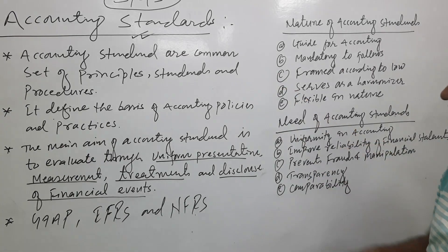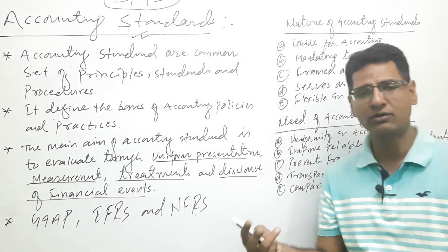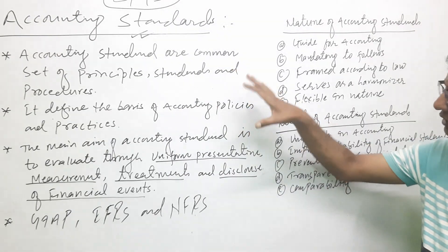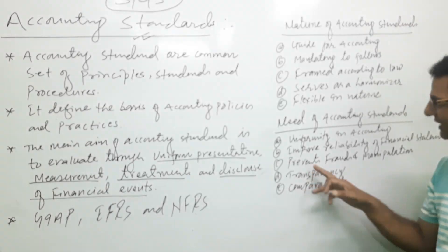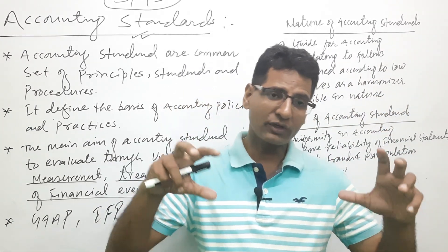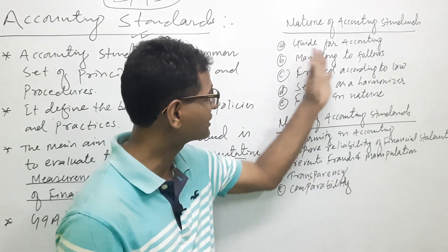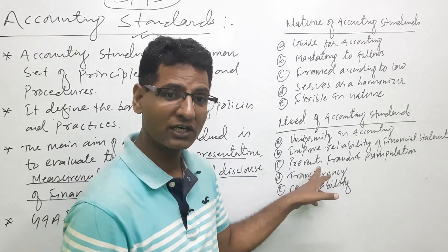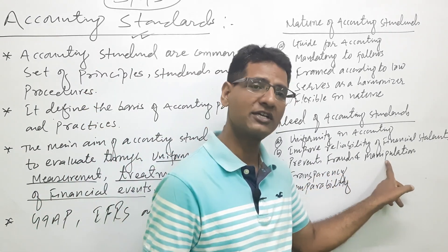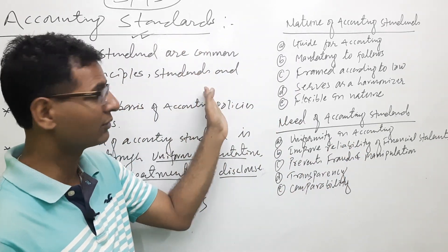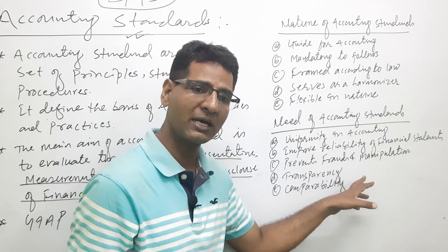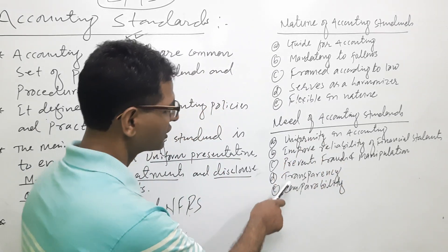A financial statement should be reliable and relevant. For any established company, its financial statement prepared on the basis of accounting standards becomes reliable and relevant. Accounting standards also help prevent fraud and manipulation. Sometimes we may commit different mistakes and errors, but accounting standards help prevent those. If we follow the set of norms, set of values, and common set of principles, fraud and manipulation are automatically reduced.